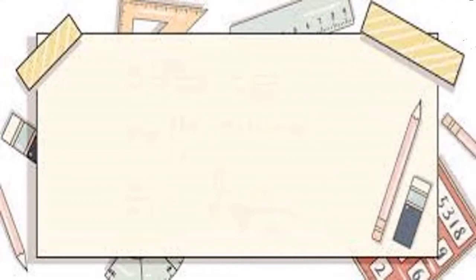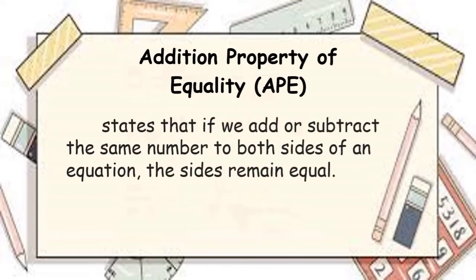When we say Addition Property of Equality, it states that if we add or subtract the same number to both sides of an equation, the sides remain equal.